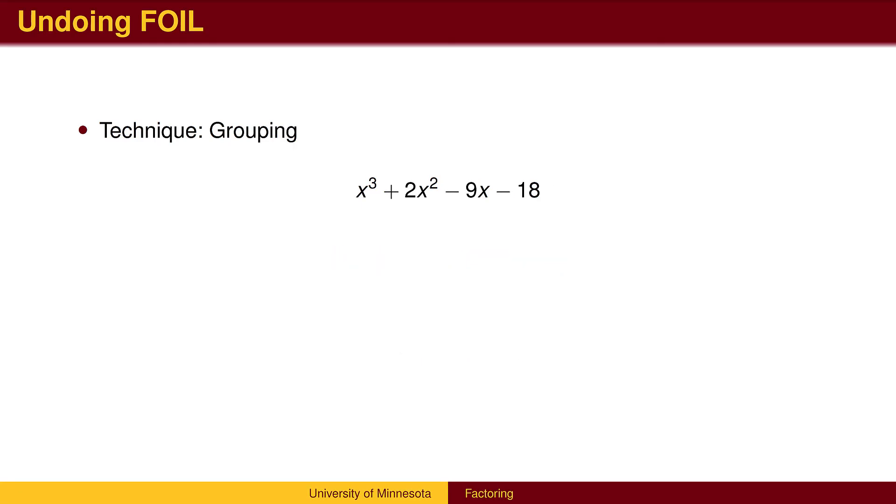Here is an example for you to try. You may wish to pause the video and work out the answer. The first two terms had a common factor of x squared. The second two terms had a common factor of 9, each leaving a factor of x plus 2. Notice that the first factor is the difference of squares and can be factored further.